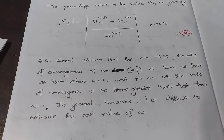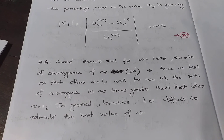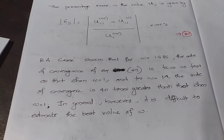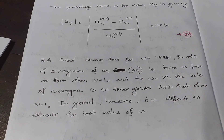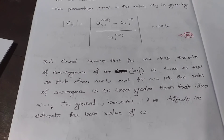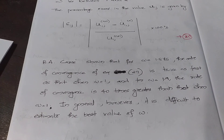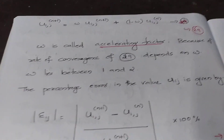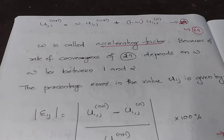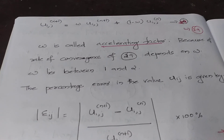It has been shown that for omega equal to 1.875, the rate of convergence of equation 29 is twice as fast as when omega equals 1, and for omega equal to 1.9, the rate is 40 times faster than when omega equals 1. In general, however, it is difficult to estimate the best value of omega. Thus, the accelerating factor omega determines the convergence of the SOR method. That is all, thank you.